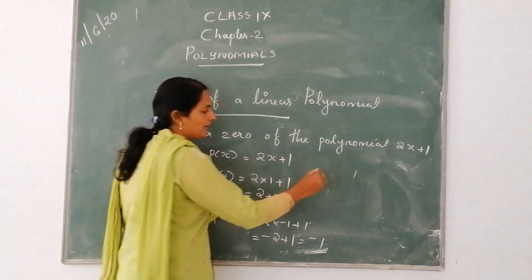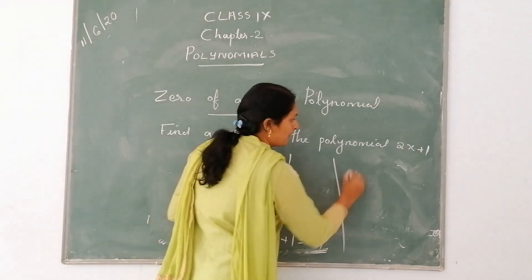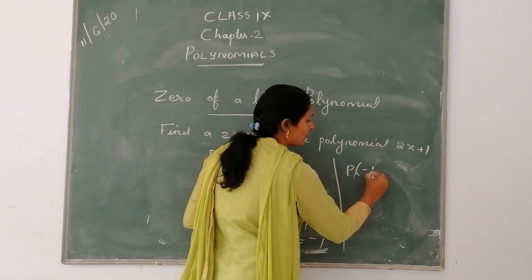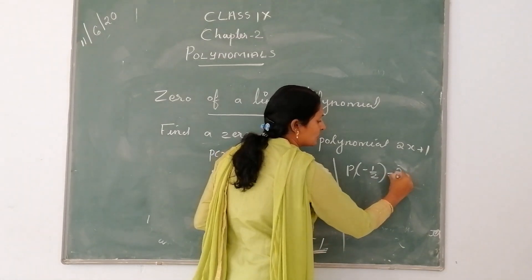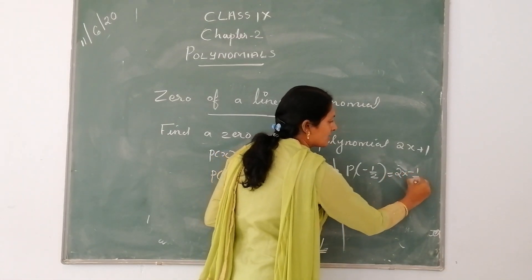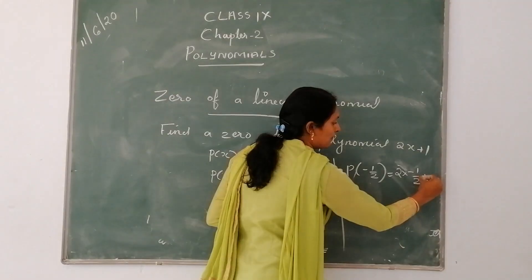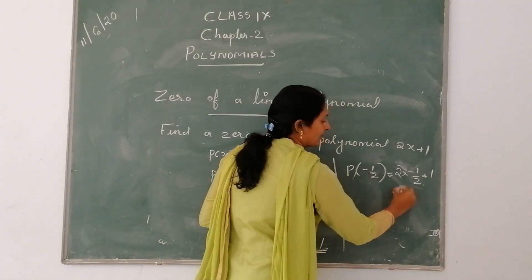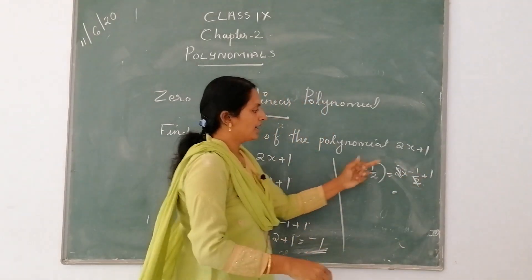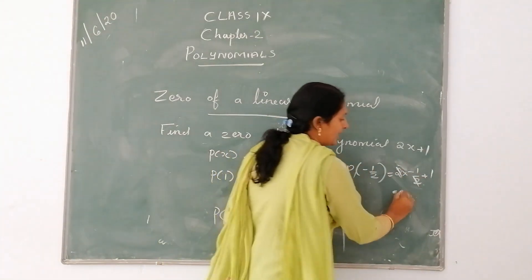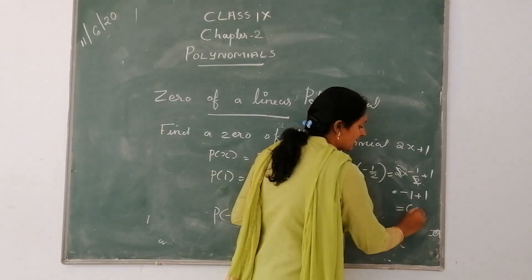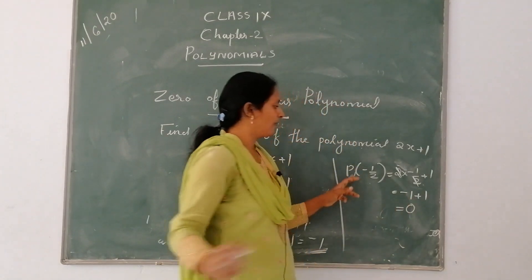Then, we will put x equal to minus 1 by 2. That is equal to 2 into minus 1 by 2, plus 1. Cancelling 2 and 2, remaining minus 1 plus 1 is equal to 0.